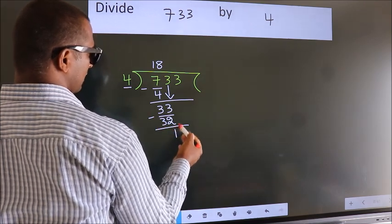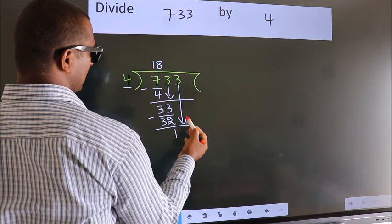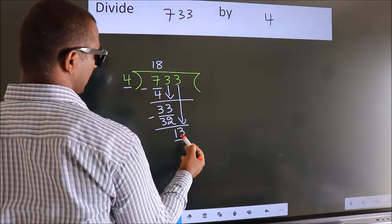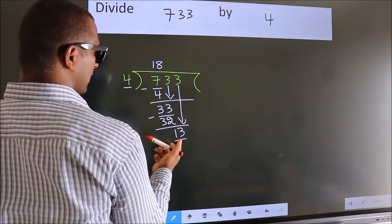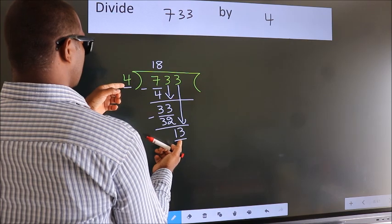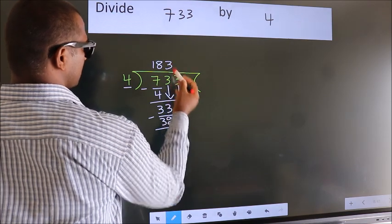After this, bring down the next number. So, 3 down, making 13. A number close to 13 in the 4 table is 4 times 3 is 12.